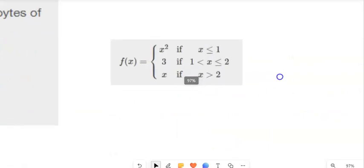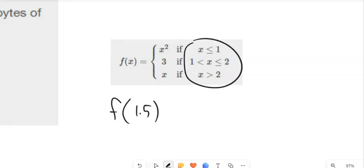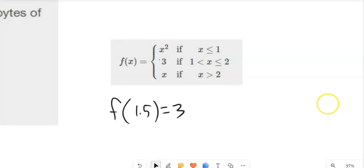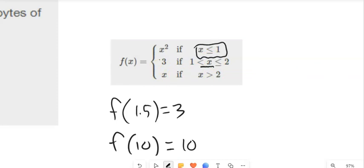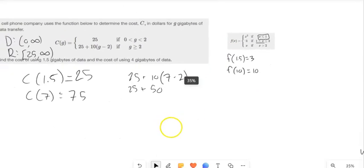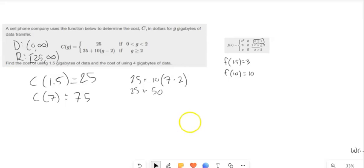Here's another piecewise function with three conditions. To evaluate f of 1.5, check the conditions: 1.5 meets this condition, so the answer is 3. If f of 10, since 10 is greater than 2, f of x equals x, so f of 10 is 10. Notice the conditions are written so there's no ambiguity — x is less than or equal to 1 in one piece and strictly less than 1 in another, so 1 isn't in both. That's a quick introduction to domain and range — give those problems a try.